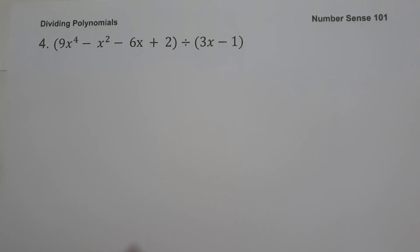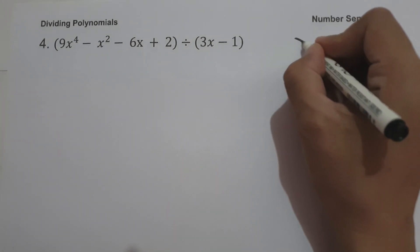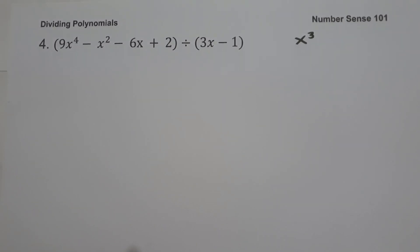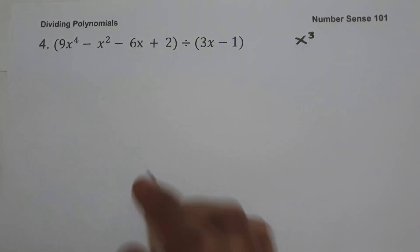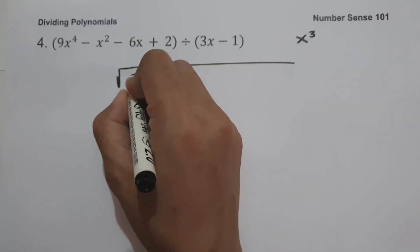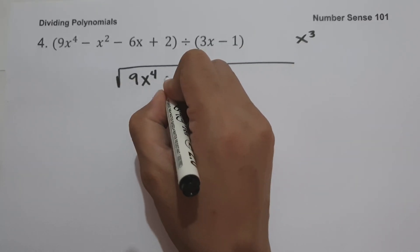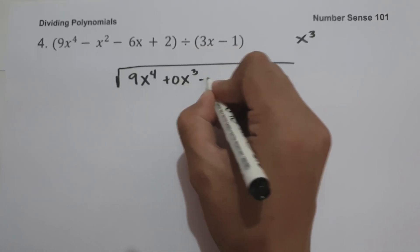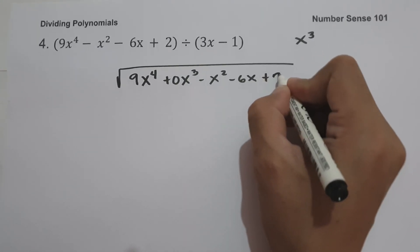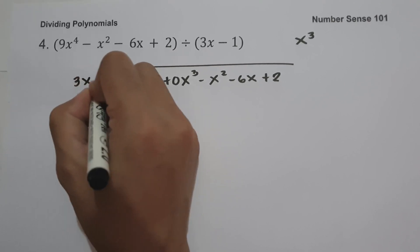On our last example, we have the quantity 9x raised to 4 minus x squared minus 6x plus 2, divided by the quantity 3x minus 1. We are going to use long division since our divisor is a binomial. Our dividend is in descending power of the variable, but there is a missing term — x cubed. So we fill in the blank with 0x cubed, giving us 9x raised to 4 plus 0x cubed minus x squared minus 6x plus 2, divided by 3x minus 1.